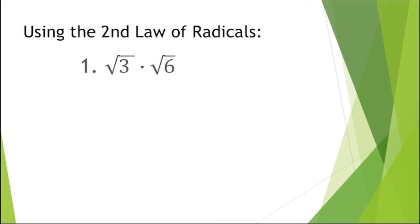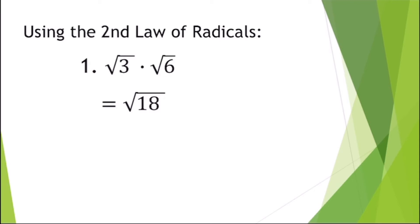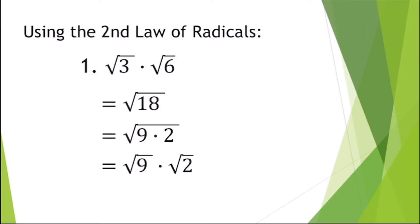Using the second law, for example: square root of three times square root of six. Multiply the radicands: three times six gives square root of eighteen. Since eighteen is not a perfect square, factor it as nine times two. Applying the second law, we get square root of nine times square root of two. Since nine is a perfect square, the answer is three times square root of two.